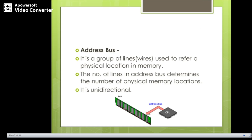The address bus is a group of lines or wires used to refer to a physical location in memory. The number of lines in the address bus determines the number of physical memory locations. It is unidirectional and is exclusively used by the processor to fetch information from memory using addressable locations.